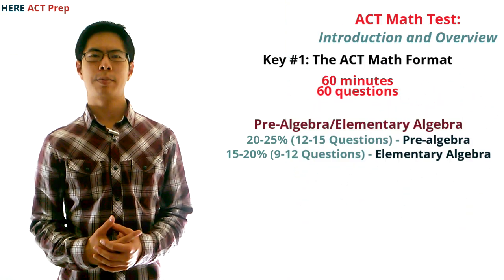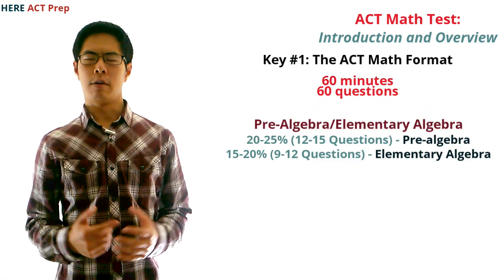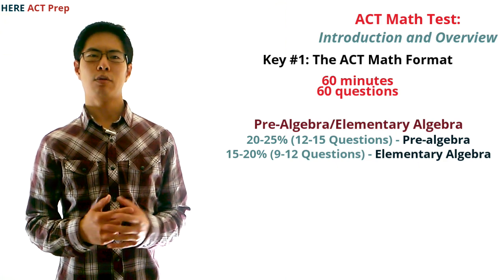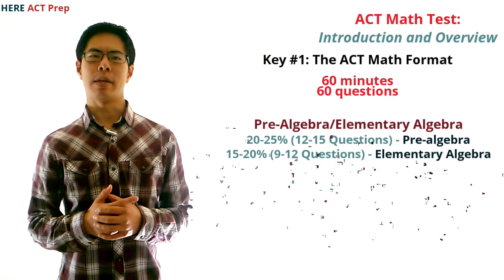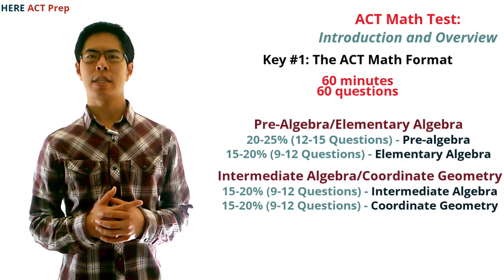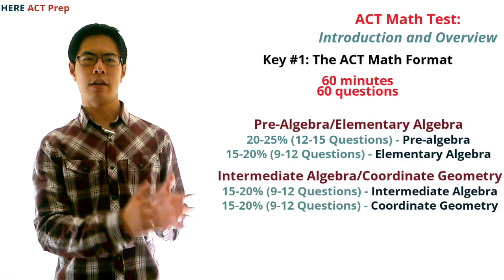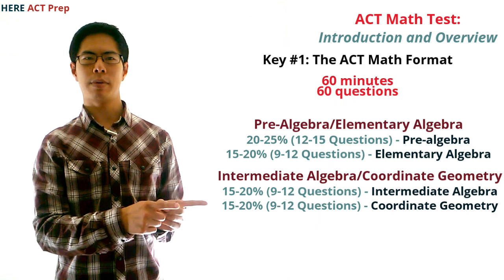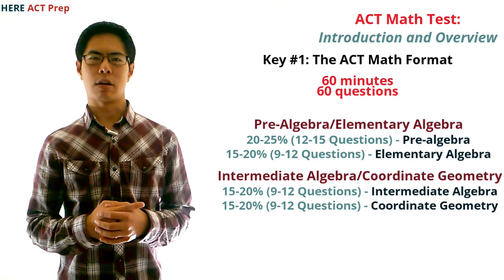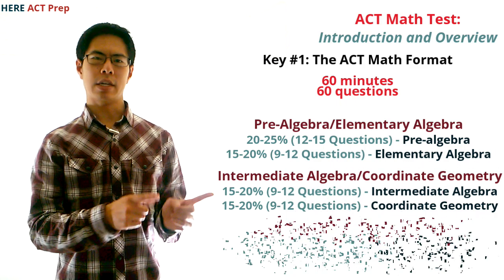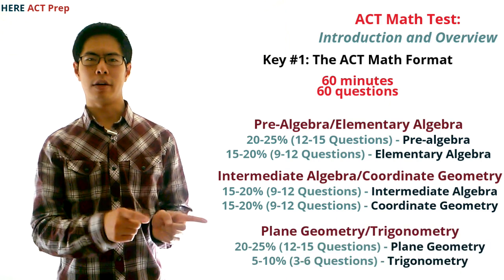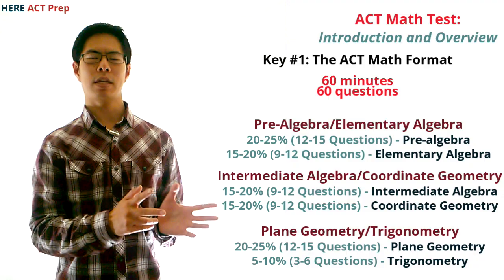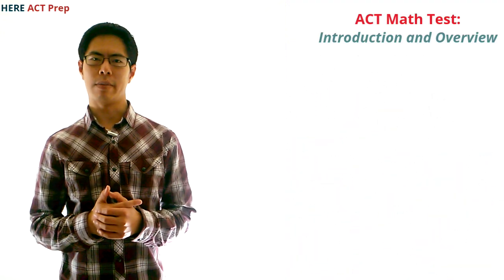For the pre-algebra slash elementary algebra section, there will be 20 to 25 percent or 12 to 15 questions on pre-algebra, and 15 to 20 percent or 9 to 12 questions on elementary algebra. For the intermediate algebra slash coordinate geometry section, there will be 15 to 20 percent or 9 to 12 questions on each. For the plane geometry slash trigonometry section, there will be 20 to 25 percent or 12 to 15 questions on plane geometry, and 5 to 10 percent or 3 to 6 questions on trigonometry.